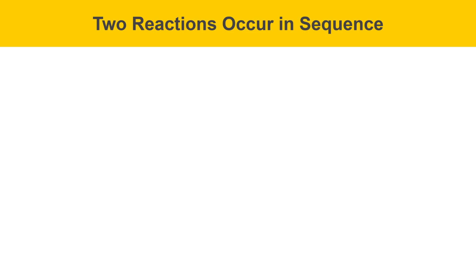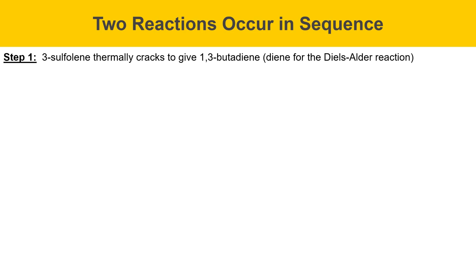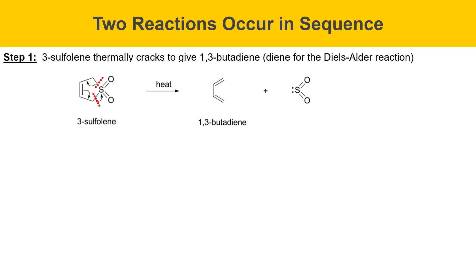Two reactions are occurring in sequence in this experiment. The first one is that 3-sulfalene thermally cracks to give 1,3-butadiene — that's the diene for the Diels-Alder reaction. When 3-sulfalene is heated, certain bonds break, generating 1,3-butadiene and sulfur dioxide. The reason we don't add 1,3-butadiene as a reactant straight away is that it's a gas and very difficult to work with, so 3-sulfalene is a convenient precursor to this diene.